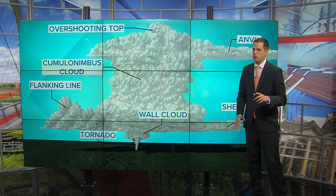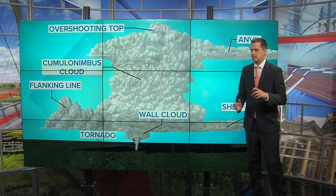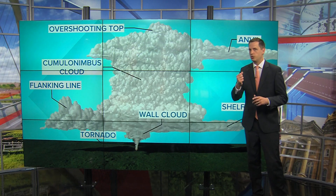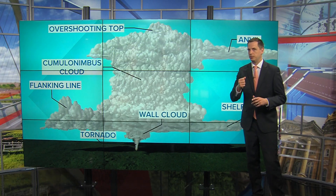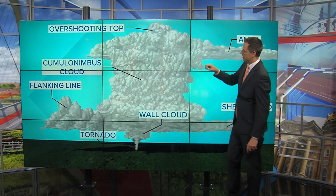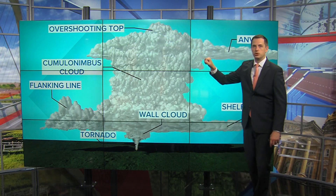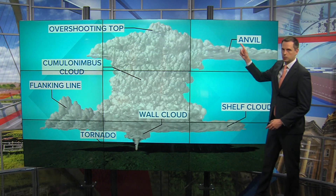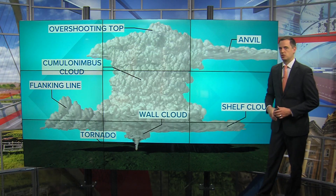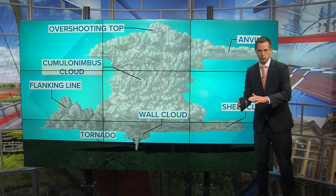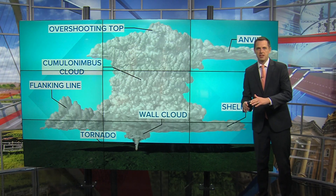Sometimes, though, these clouds rise so quickly that they punch through that equilibrium level, leading to a dome-like top called the overshooting top. The anvil of the storm is when the cumulonimbus cloud fans out along that equilibrium level.